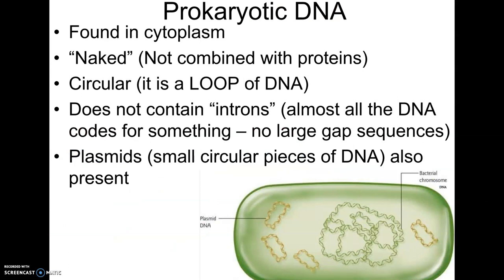Prokaryotic or bacterial DNA is found in the cytoplasm, in an area called the nucleoid, but there's no nuclear membrane protecting it. Also, prokaryotic DNA is what we call naked DNA — eukaryotic DNA is associated with special proteins, but prokaryotic DNA is simply just DNA with no proteins associated with it. It is just the double helix, and it is circular — a loop with no top and bottom, literally a ring.